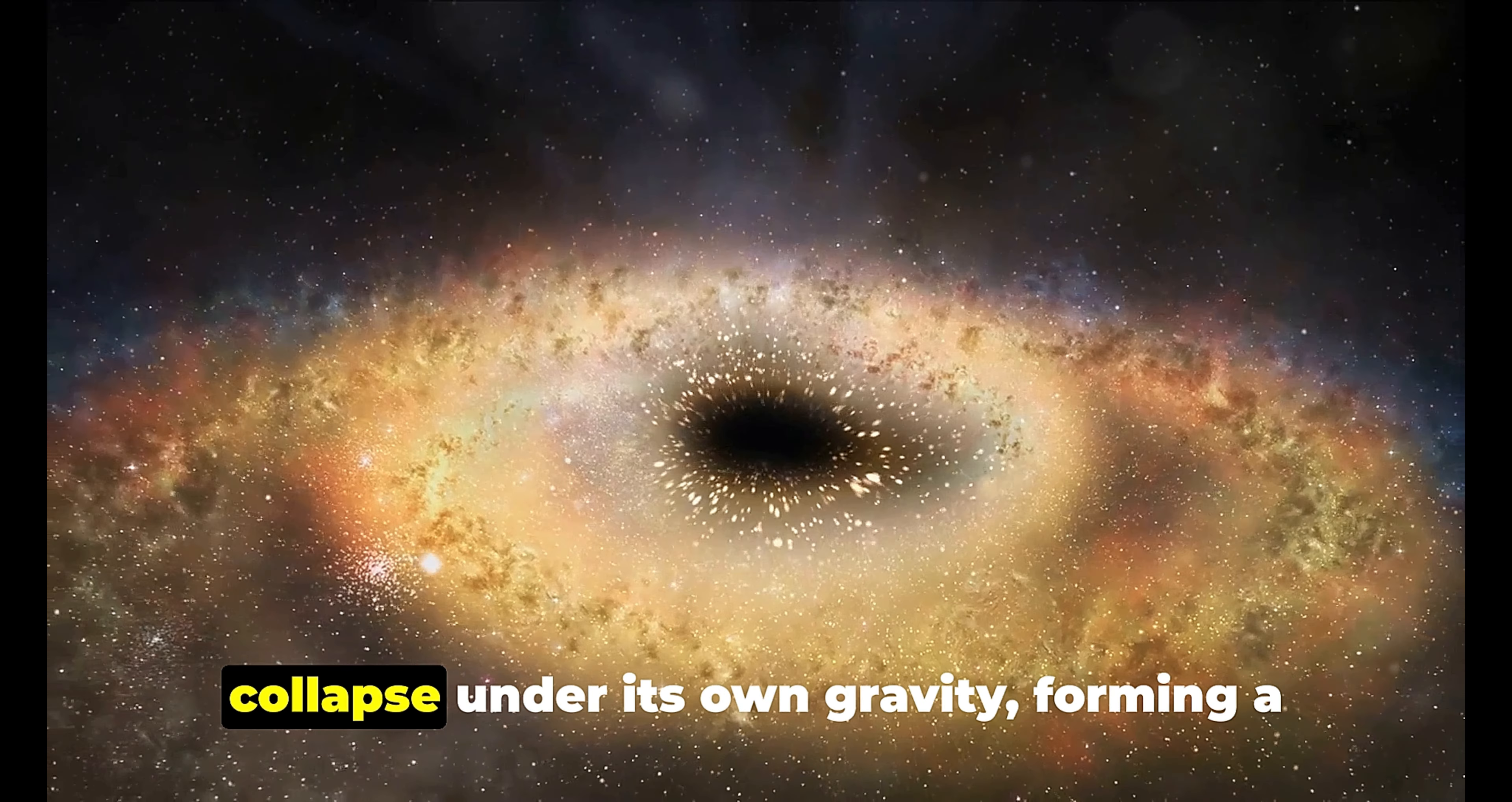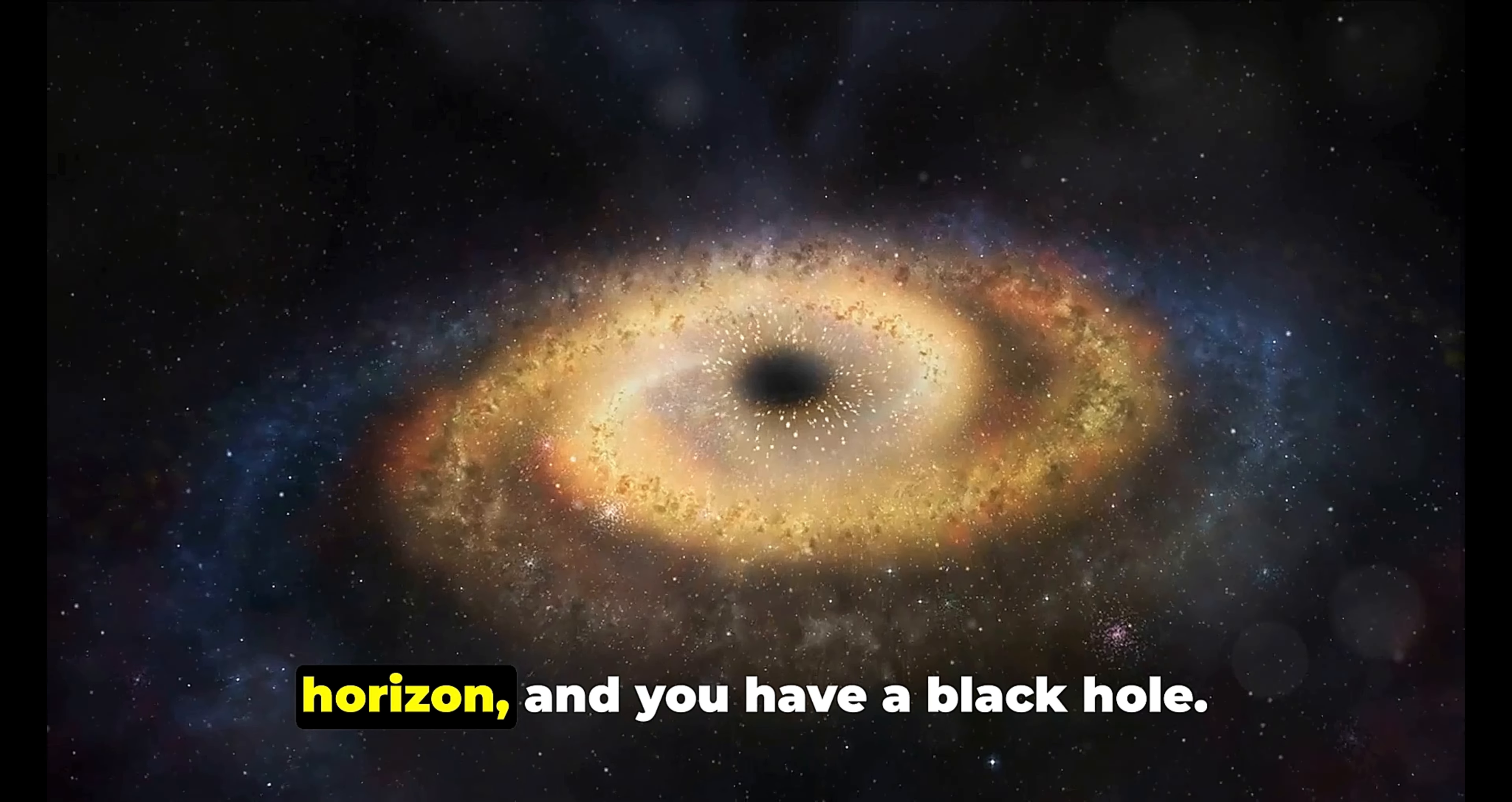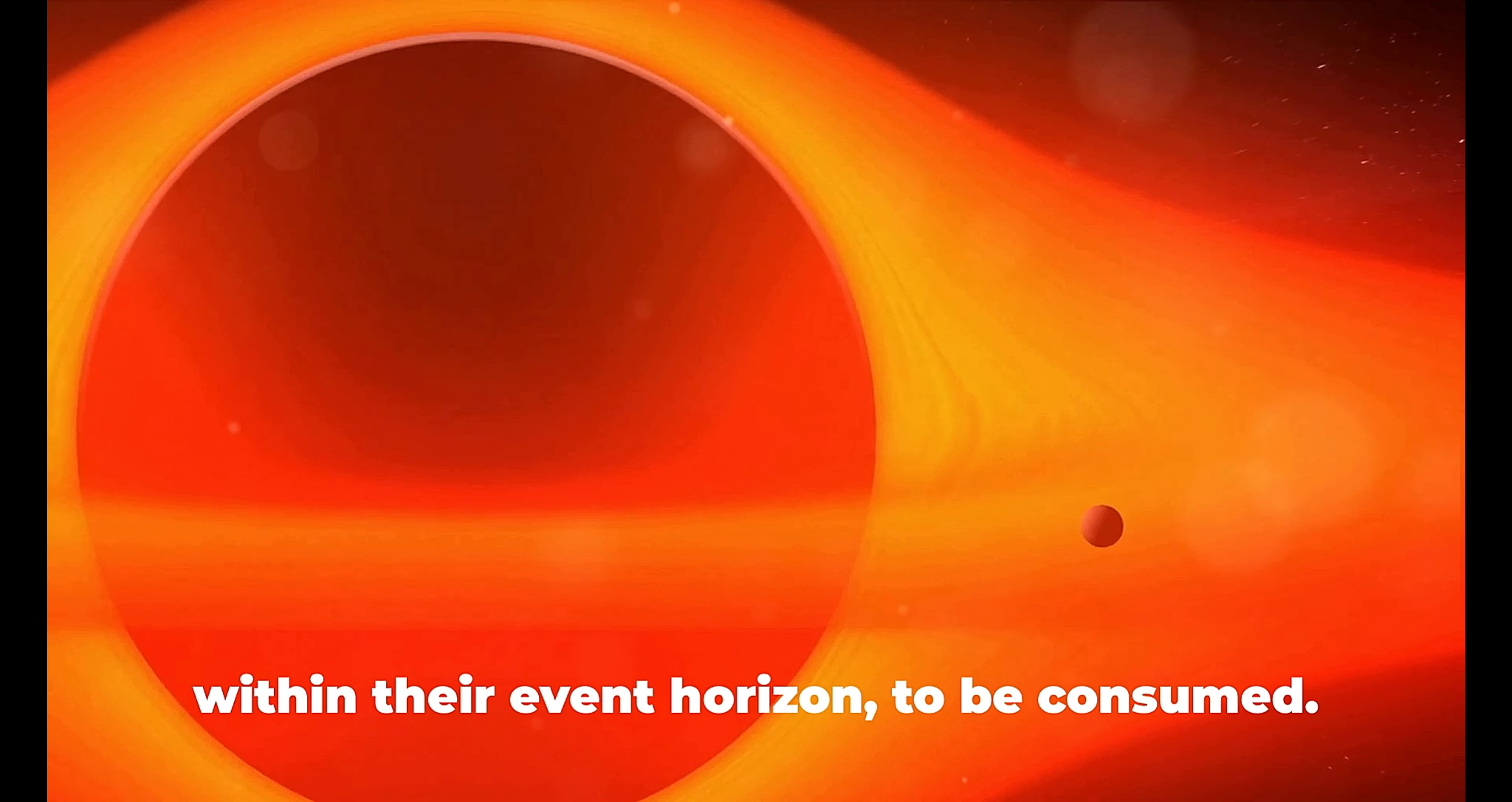Consider a star, considerably larger than our sun, nearing the end of its lifespan in an explosive display of a supernova. It leaves behind a core. If this core is supermassive, it can collapse under its own gravity, forming a singularity, a point in space with infinite density. Enclose this singularity within an event horizon, and you have a black hole.